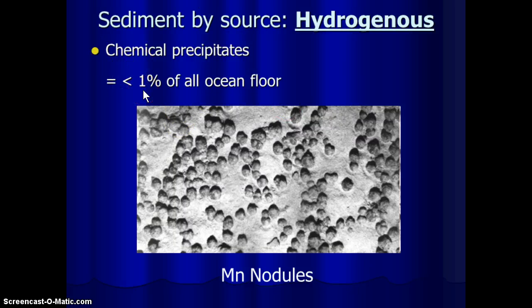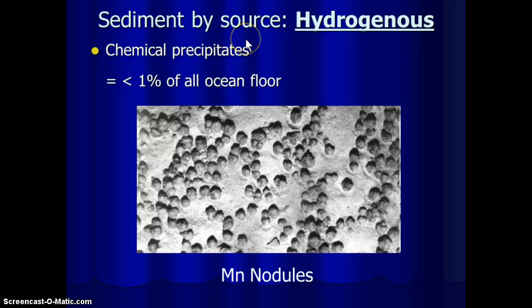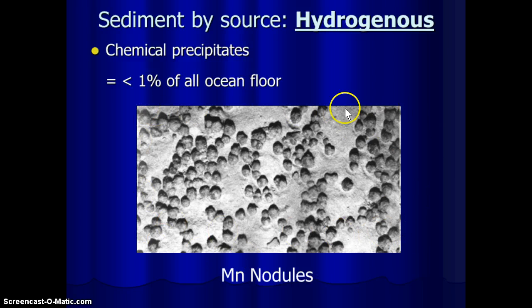Less than 1% of the remaining sediments come from what we call hydrogenous — hydro meaning water, so produced from the water. These are essentially chemical precipitates: when water chemistry reaches the exact environmental conditions for ions to come together and form a particle that settles out. This happens frequently near tectonic events or underwater volcanic events like mid-ocean ridges. For example, manganese pours out and precipitates, forming manganese nodules that drop to the floor — but overall, less than 1% of marine sediments.